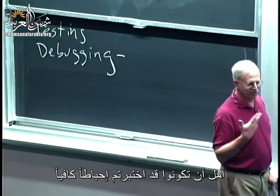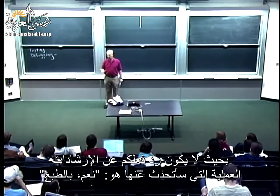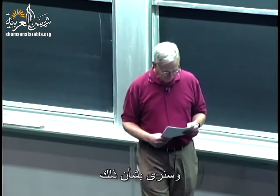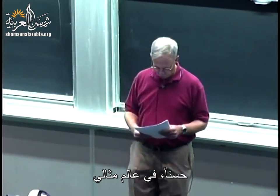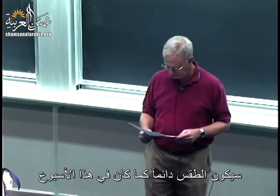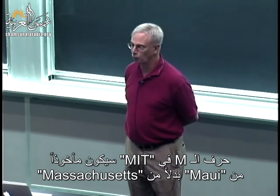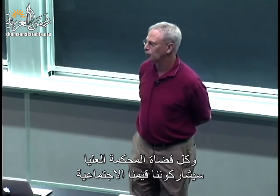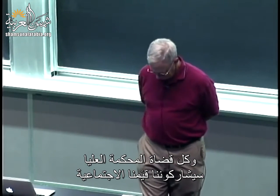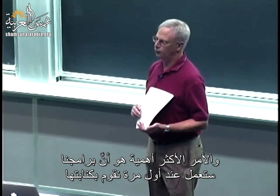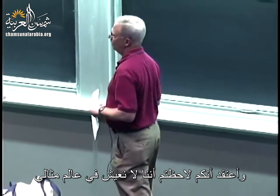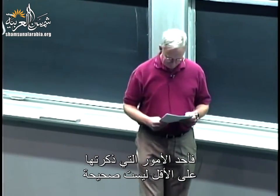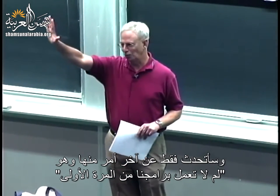My hope is that at this point, you've experienced enough frustration that the pragmatic hints I'm going to talk about will actually make sense to you. In a perfect world, the weather would always be like it's been this week, the M in MIT would stand for Maui instead of Massachusetts, quantum physics would be easy to understand, all the Supreme Court justices would share our social values, and most importantly, our programs would work the first time we typed them. By now, you may have noticed that we do not live in an ideal world. I'm only going to address the last one — why our programs don't work.